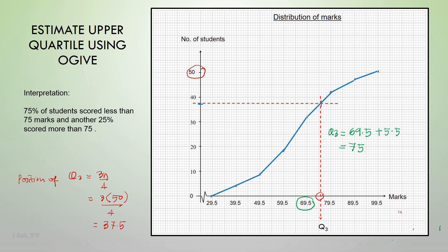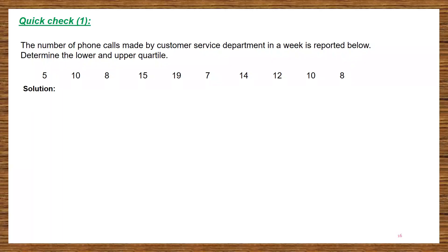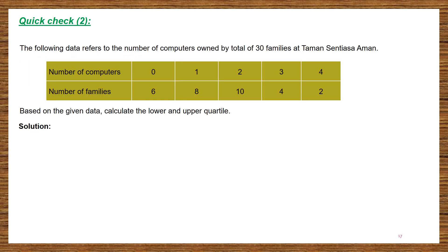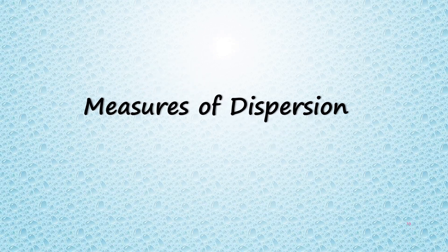Therefore, 75% of students scored less than 75 marks, and another 25% scored more than 75 marks. Now it's time for hands-on. There are three exercises: first, focus on ungroup data; second, focus on ungroup data with frequency; and last, group data. Please try. That's all for today. Next, we will focus on measures of dispersion. Assalamualaikum and goodbye.